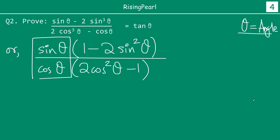So this whole expression — 1 minus 2 times sin square θ divided by 2 cos square θ minus 1 — must be equal to 1. You should recognize that the identity most beneficial at this point will be the first one: sin square a plus cos square a equals 1, because we have both sin square θ and cos square θ. So we are going to replace 1 with sin square θ plus cos square θ.